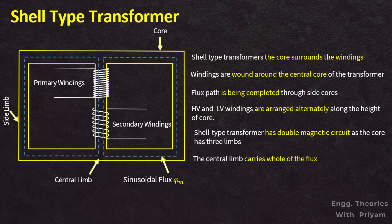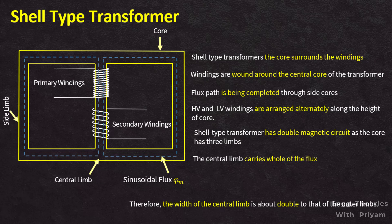The central limb carries the whole of the flux as both windings are placed on the central limb, whereas the side limbs carry half of the flux. Therefore, the width of the central limb is about double the width of the outer limbs. The coils are usually multi-layer disc-type or sandwich windings, wound in the form of pancakes. The different layers of multi-layer discs are insulated from each other by paper. The complete winding consists of stacked discs with insulation space between the coils, forming horizontal cooling and insulating ducts.